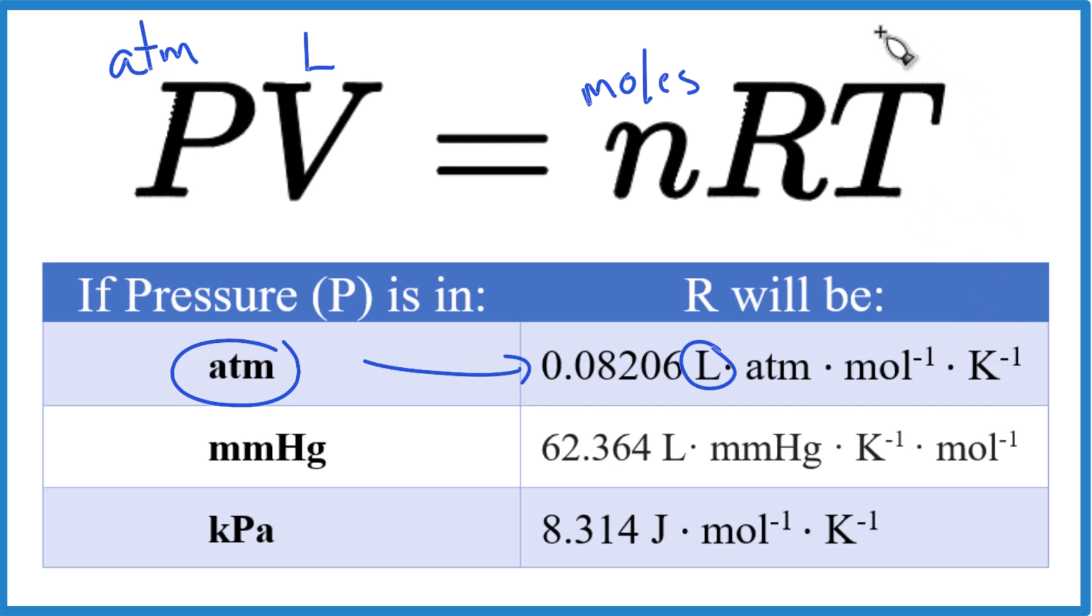And then finally, temperature, that's going to be in degrees Kelvin, or Kelvin degrees, you could say. So all of these units are because of R, so everything will cancel out when we're done.